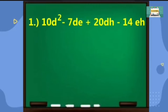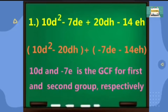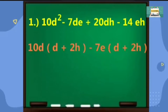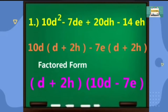Example number two. Step one, group the given polynomials into two. This time, I group the first and the third term, and the second group will be the second and the last term. Step two, find the GCF. For the first group we have 10b, and for the second group we have negative 7e. Step three, find the common factor of each group. The common will be 10b times the quantity d plus 2h, minus 7e times the quantity d plus 2h. Note that we have common binomial d plus 2h, so we will have the quantity of d plus 2h times the quantity of 10b minus 7e.